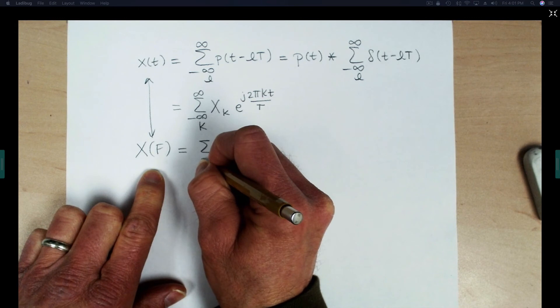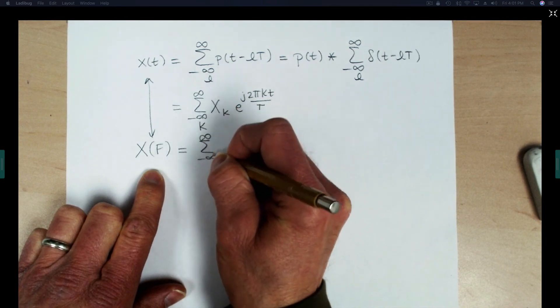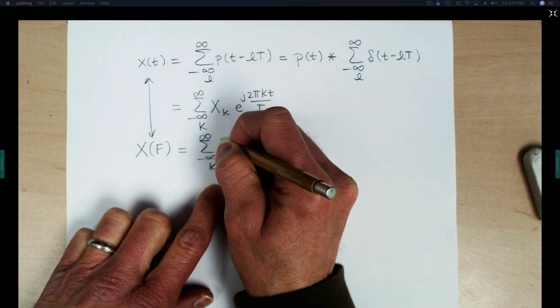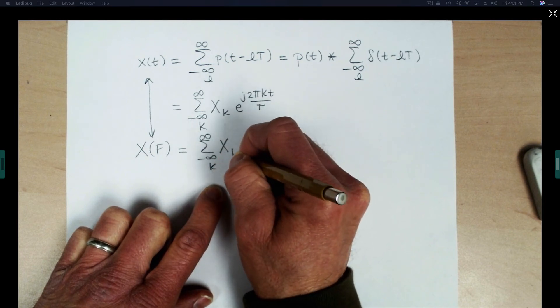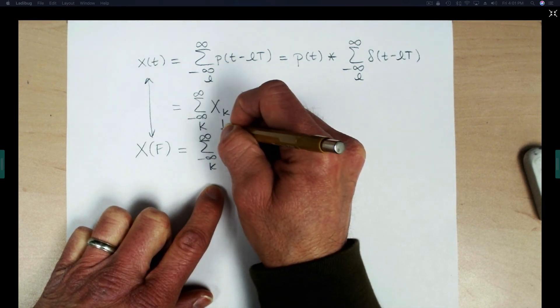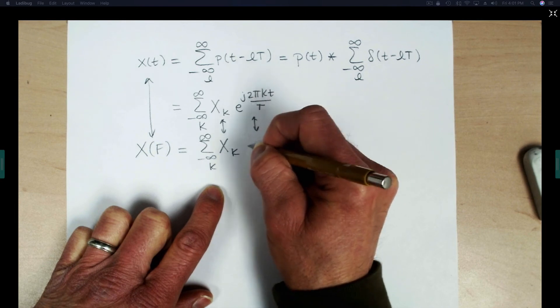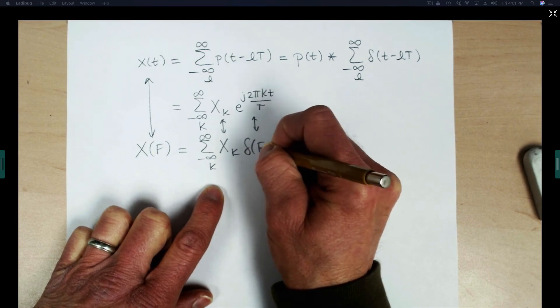The sum in the time domain stays a sum in the frequency domain. The coefficients come through X of K and then the complex exponential becomes a delta function as we have seen.